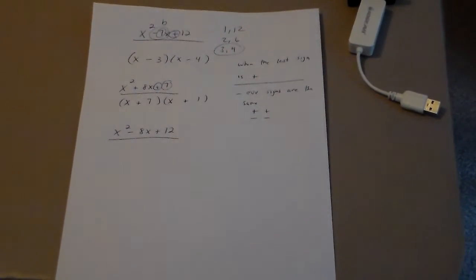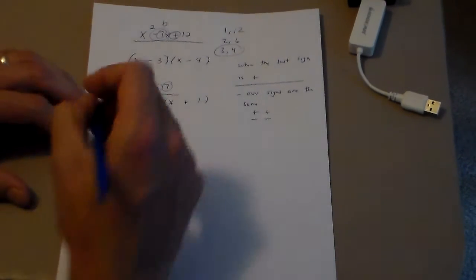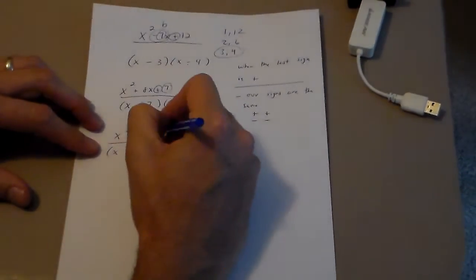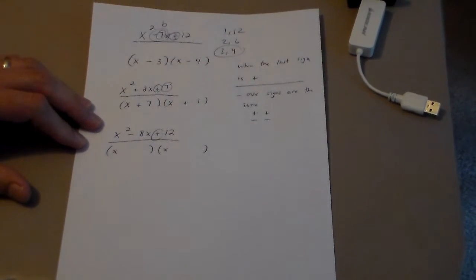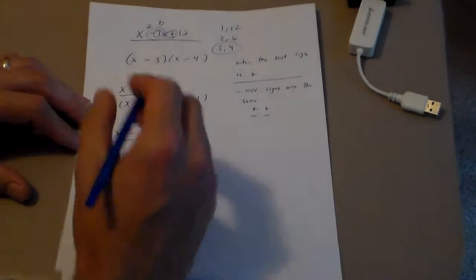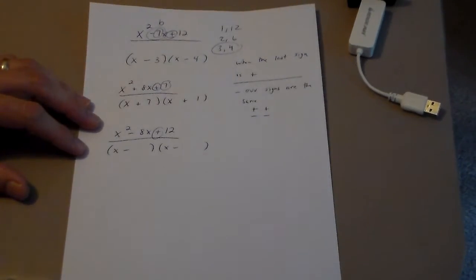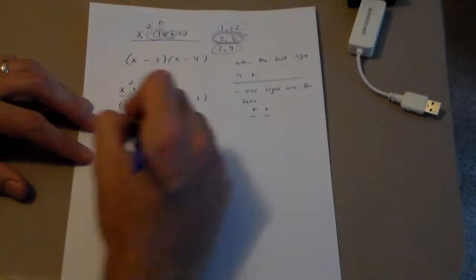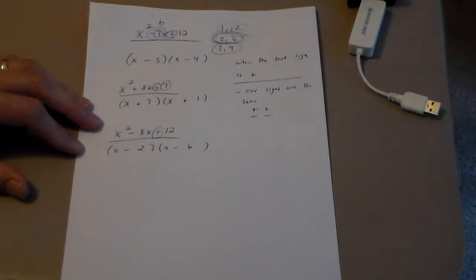Here's one for you to try — pause the video and give it a shot. All right, let's see what you did: x and x. That last sign is positive, so the signs are the same — either both positive or both negative. That middle sign is negative, so they're both negative. Factors of 12 that add to 8: that's 2 and 6.